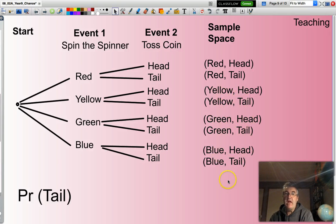And of those outcomes, how many tails do I have? Well, you can count those up, and you'll see that there are four. Four out of eight, which is effectively one half.